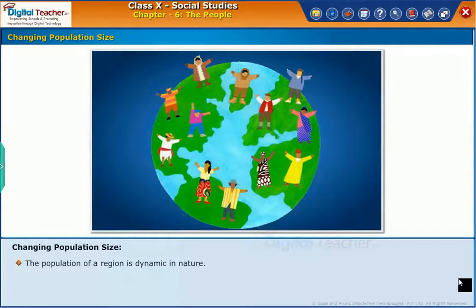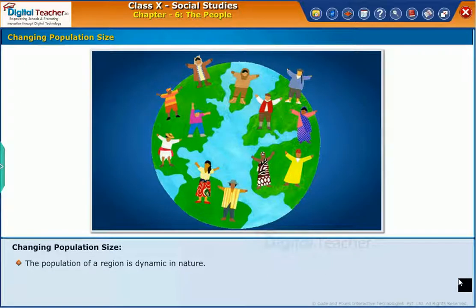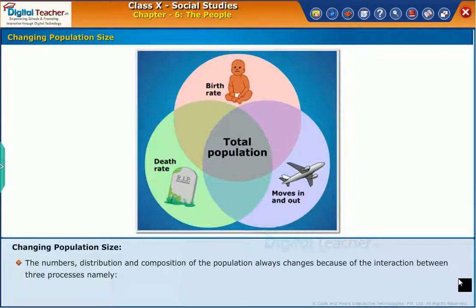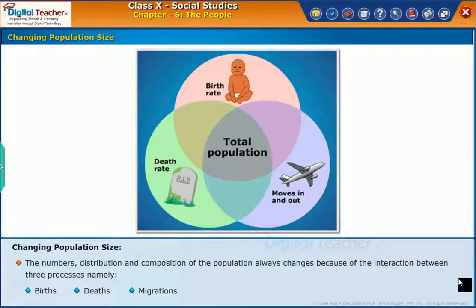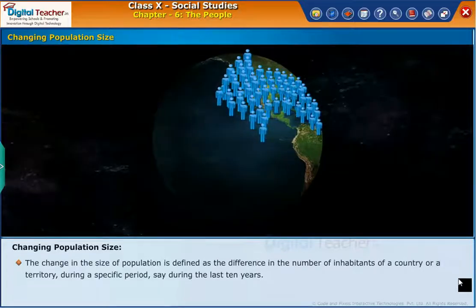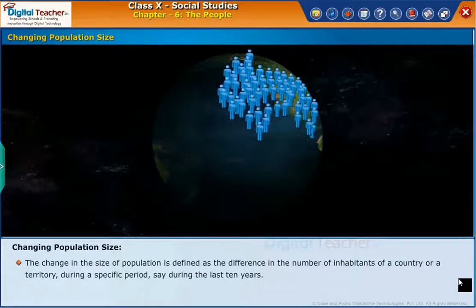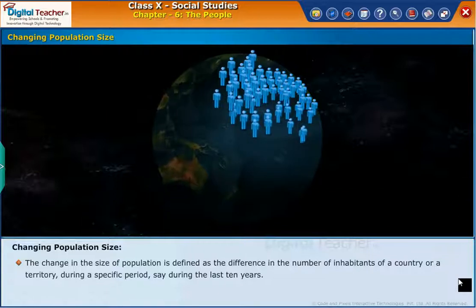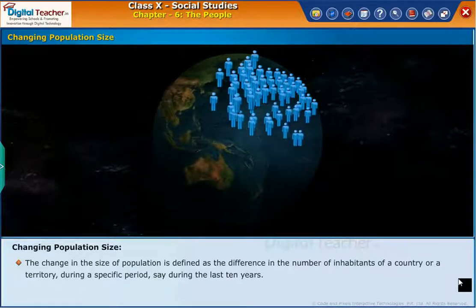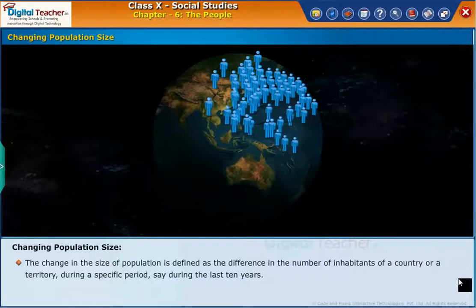Let us learn about how change in population size occurs. The population of a region is dynamic in nature. The numbers, distribution and composition of the population always changes because of the interaction between three processes namely births, deaths, and migrations. The change in the size of population is defined as the difference in number of inhabitants of a country or a territory during a specific period, say during the last 10 years.